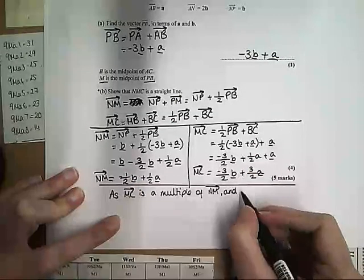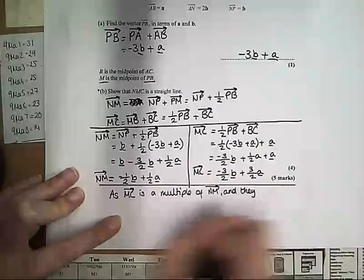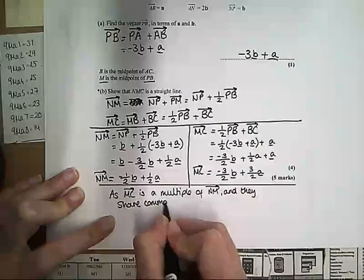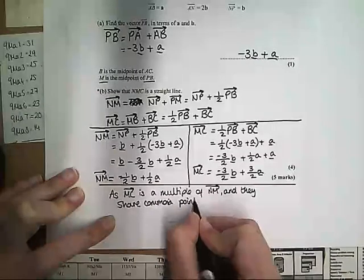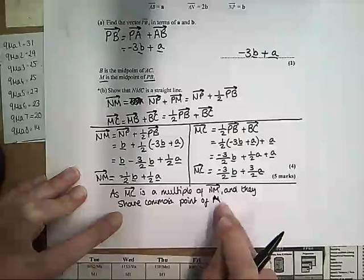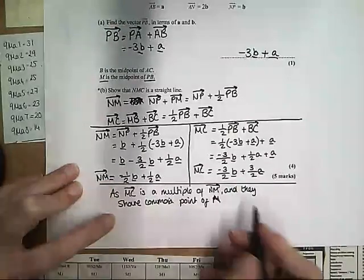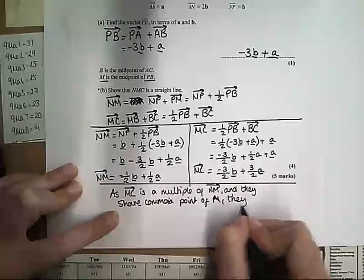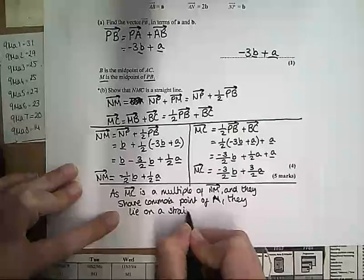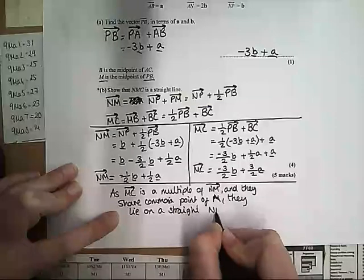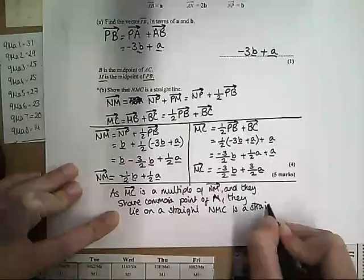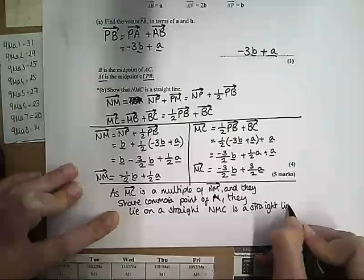So you say, as MC is a multiple of NM, meaning we could just times NM by 3 and we'd get MC, and that means the two things must be parallel. And because they share a common point, okay, so our common point is M because we've got M in both of them. So because they share a common point M, not only are they parallel, they lie on a straight line. Okay, so they lie on a straight line. And so NMC is a straight line, as required.